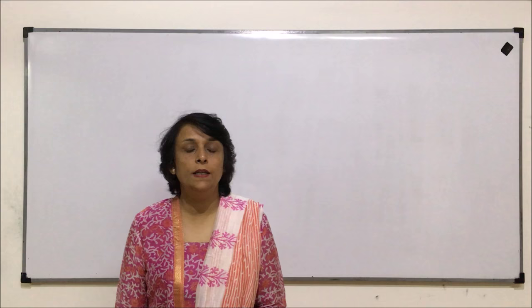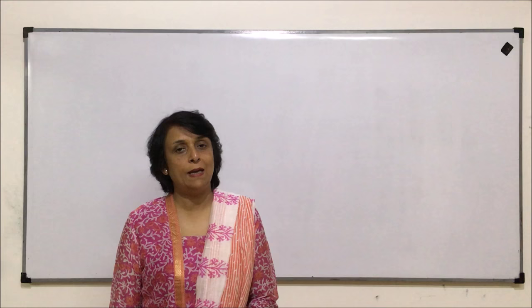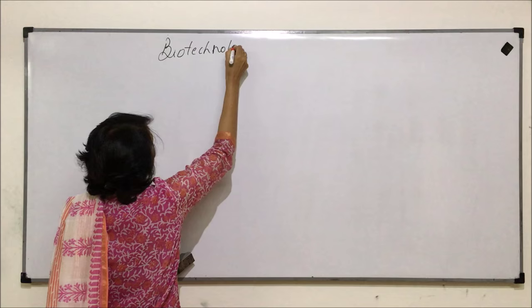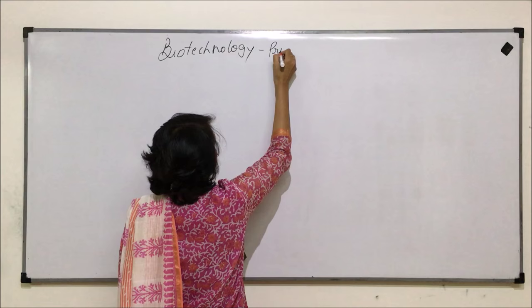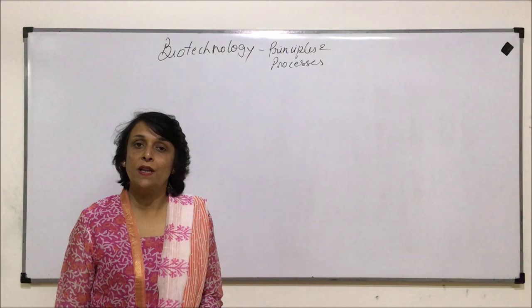We are going to start with biotechnology. In this unit of biotechnology there are two chapters. The first is the principles and processes, and in the second chapter we'll be discussing only the applications of biotechnology. In the first chapter we'll discuss all the basic things about biotech and the various techniques which we would be using.